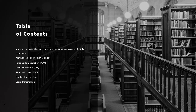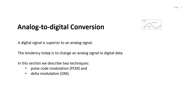Here is the table of contents for you to navigate through this video. In the previous videos we saw digital data converted into digital signals. However, sometimes we have an analog signal created by a microphone or film camera, so we want to convert it into a digital signal. As we saw in the previous chapter, digital signals are superior to analog signals, so the tendency nowadays is to change an analog signal to digital data. In this section we describe two techniques: pulse code modulation (PCM) and delta modulation, both used to convert analog to digital.